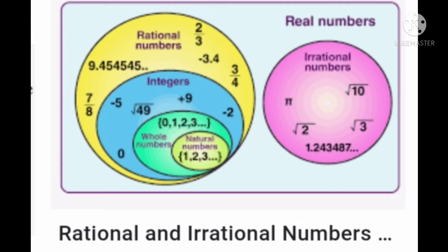And integers are positive integers and negative integers. So, 49 is also a positive integer. Minus five and minus two are also negative integers. Plus nine is also a positive integer. Zero is also included in the integer set.